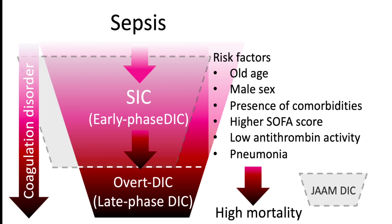According to studies, the prevalence of SIC is around 22 to 24 percent. Crucially, SIC often presents early, either at the time of sepsis diagnosis or within the next 4 days. Mortality is significantly higher in patients with SIC. In the HYPRESS trial, the 90-day mortality rate for SIC patients was 26.8 percent, compared to just 13.9 percent for those without SIC — a substantial difference.